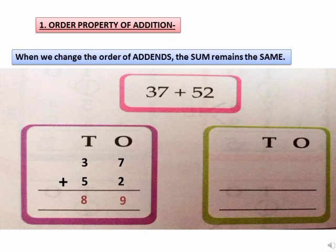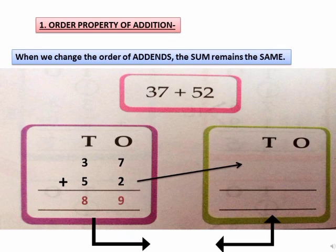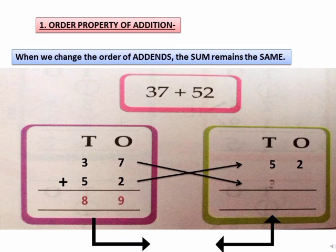According to the property, now let us change the order of addends. The first addend will become the second addend and the second addend will become the first addend. We will write 52 first, and below 52 we will write 37. Now, put the addition sign.